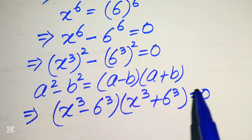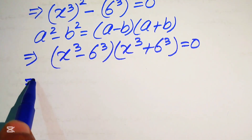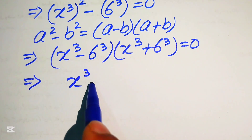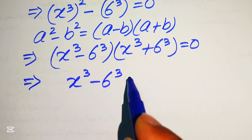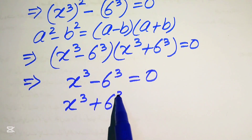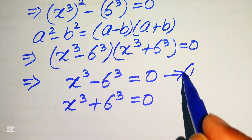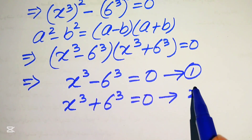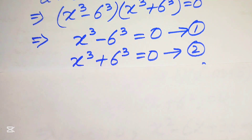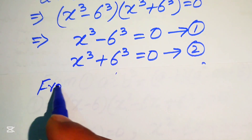Using that formula, we write: (x³ − 6³)(x³ + 6³) = 0. We break this into two cases: equation 1 is x³ − 6³ = 0, and equation 2 is x³ + 6³ = 0. We solve each equation to find the values of x.